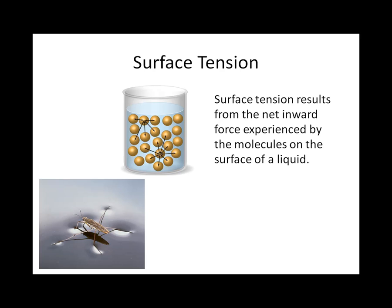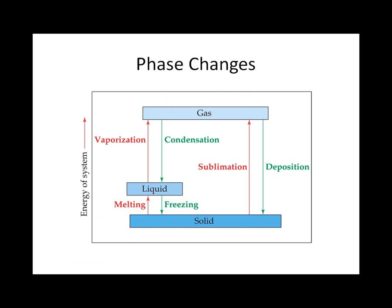Have you ever wondered how water striders can walk on water? They are able to do this because of surface tension. Surface tension is defined as the net inward force that occurs between molecules on the surface of a liquid. Over the trillions of molecules that make up the surface area of water, this tension can hold up objects with densities greater than that of the actual liquid, like a water strider. The two properties we just discussed — viscosity and surface tension — are both inherent to the liquid state.